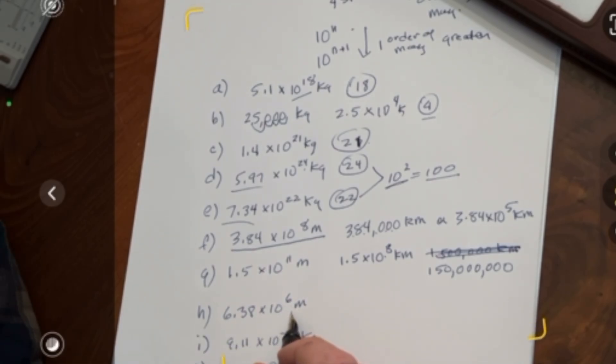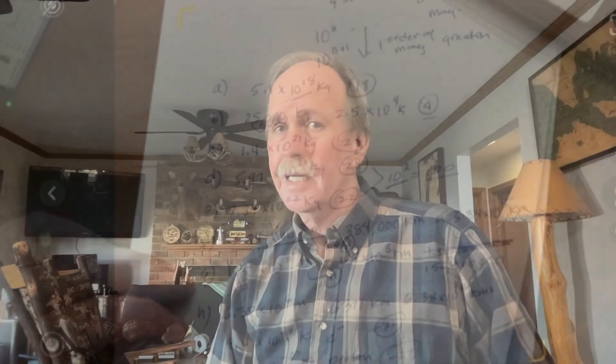6.38 times 10 to the 6th meters, that's the radius of the Earth, and that's 6,371 kilometers. Next, 9.1 times 10 to the negative 31, that's the mass of an electron. Finally, the mass of the Sun is about 2 times 10 to the 31 kilograms. That's negative 27, that's negative 31. And that's the answer to that question.